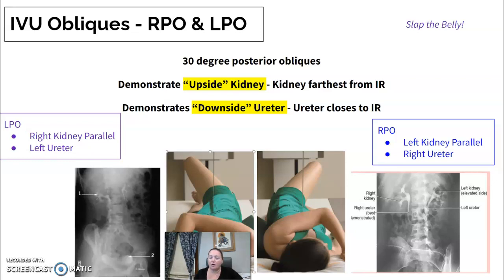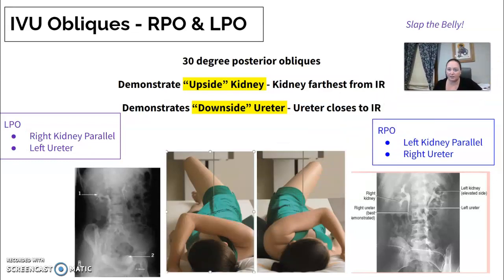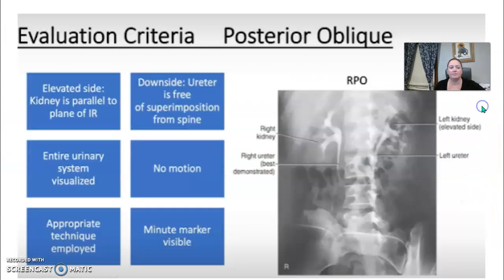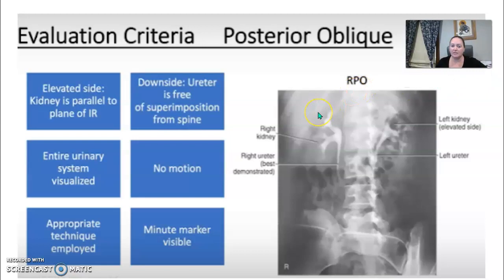The oblique abdomens for IVU are taken to demonstrate either the kidney or the ureter of interest. We use posterior obliques — LPO and RPO — at 30 degrees. To demonstrate a kidney, the kidney of interest must be the side up; an LPO therefore demonstrates the right kidney. The ureters are demonstrated on the side down, so an LPO showing the right kidney will also show the left ureter. When the side is raised, the ureter on that side falls into the spine.